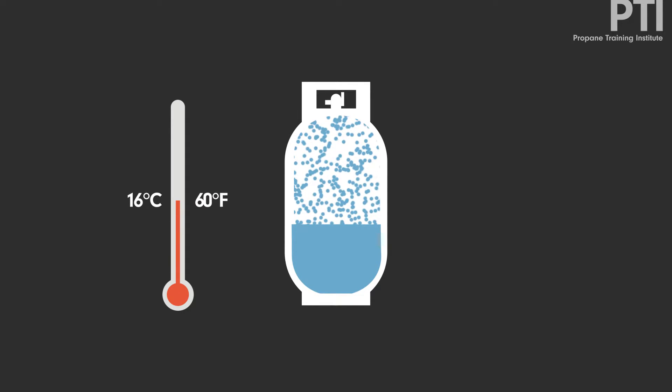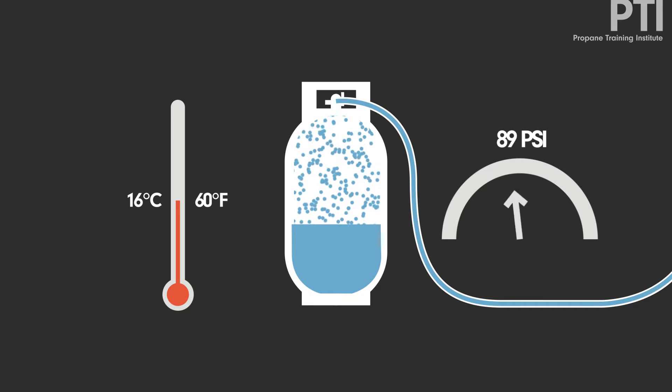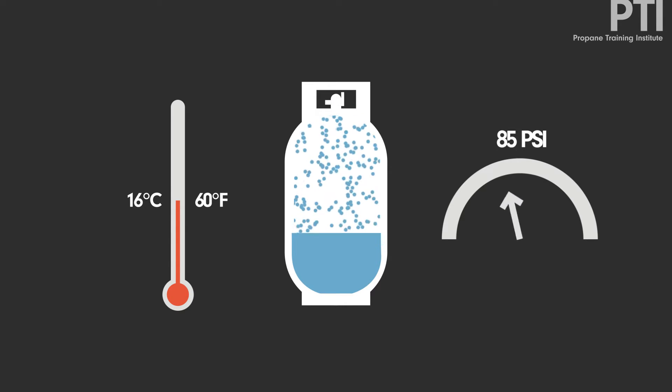For example, at 16 degrees Celsius, propane will equalize at 92 PSI and remain liquid. Consuming propane drops the pressure momentarily, but the liquid then evaporates and balances the pressure back to 92 PSI.